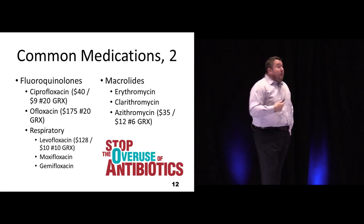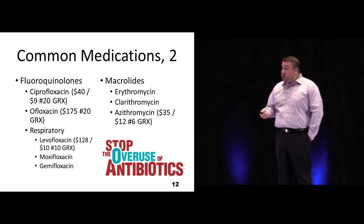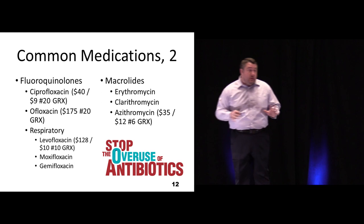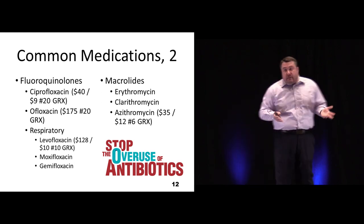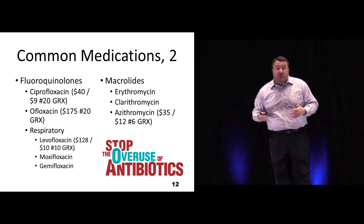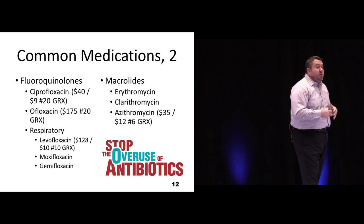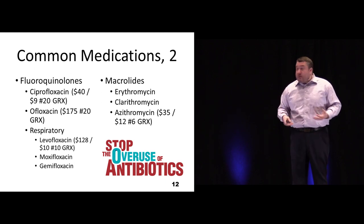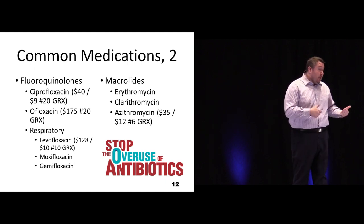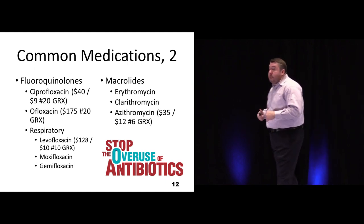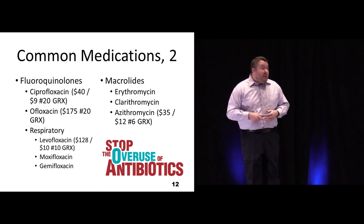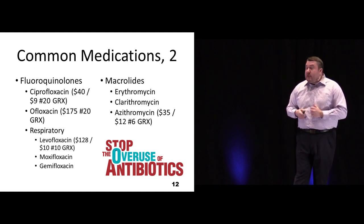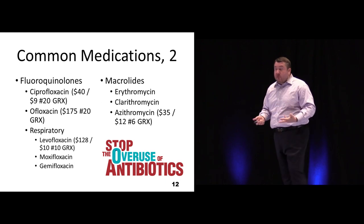Fluoroquinolones are good agents for complicated pulmonary and GI/GU infections. Respiratory quinolones like levofloxacin and moxifloxacin cover atypicals and have strong anti-pseudomonal properties — important for nursing home or hospitalized patients. Ciprofloxacin is considered below-the-diaphragm only, covering mostly GI/GU bugs, but resistance has grown significantly over the last 10-15 years. Respiratory quinolones are needed for respiratory infections or sepsis. They also carry several black box warnings for complications.